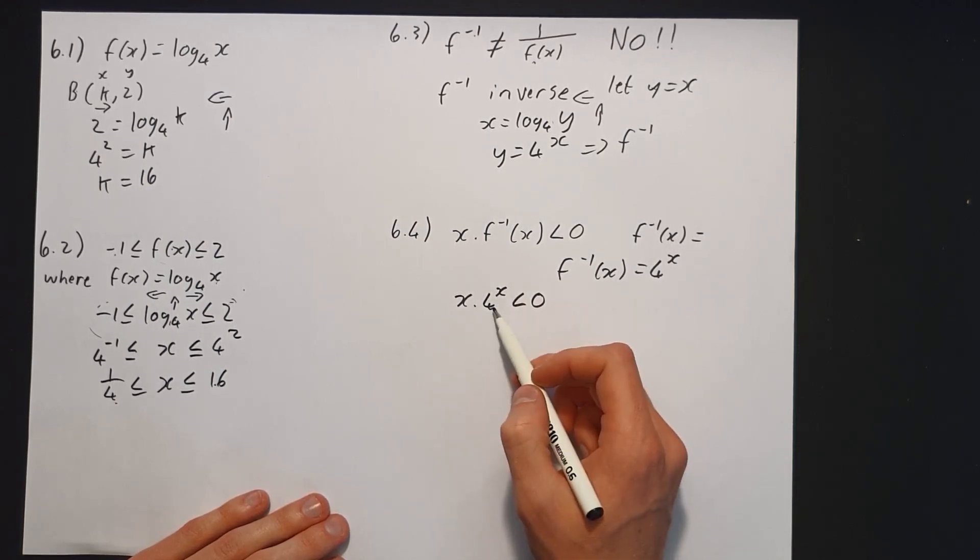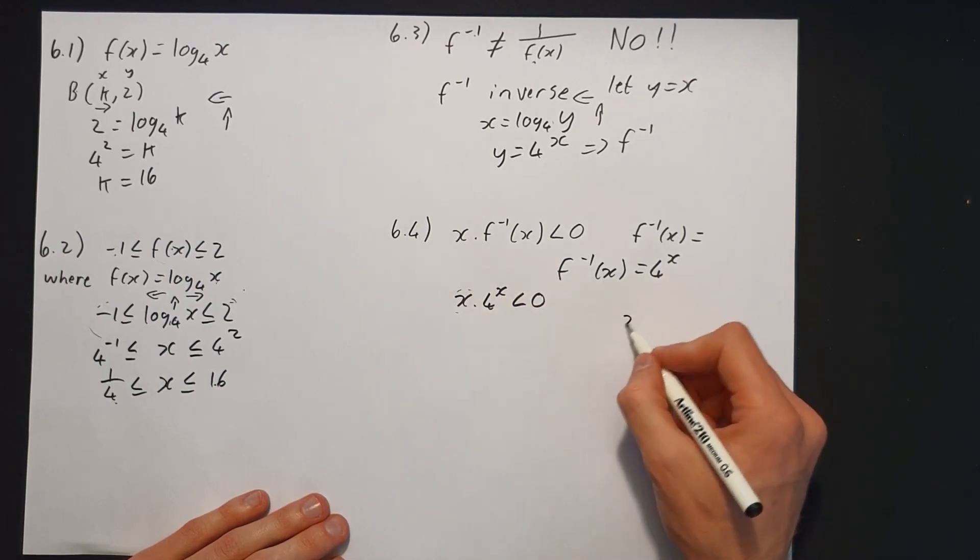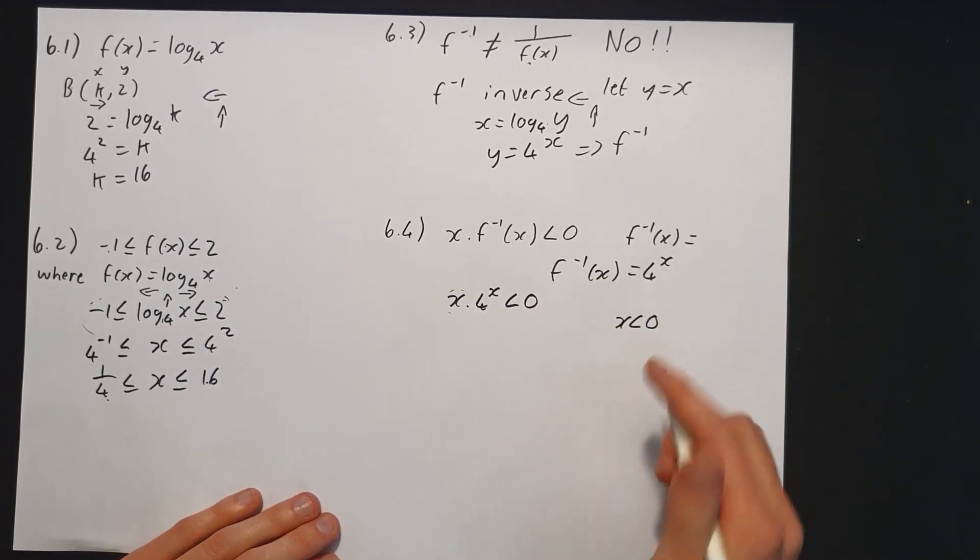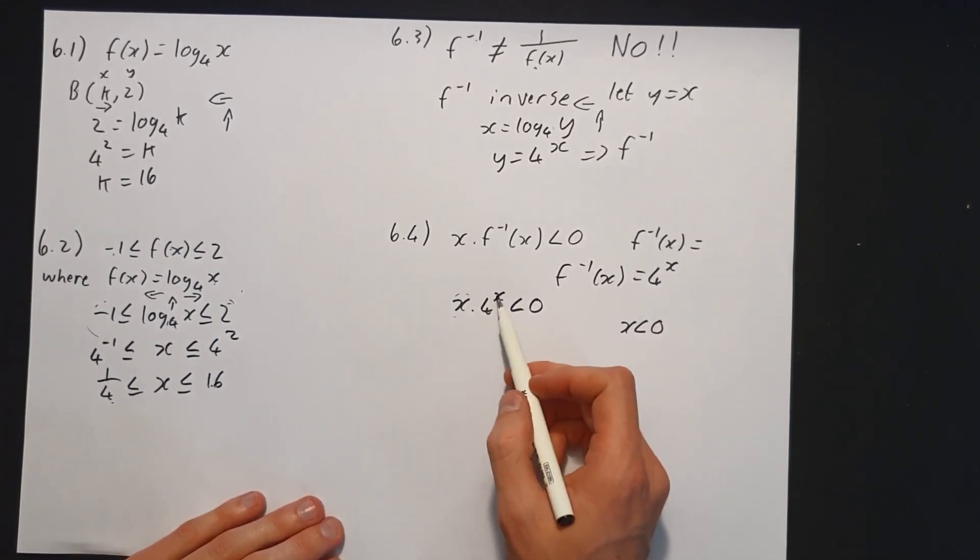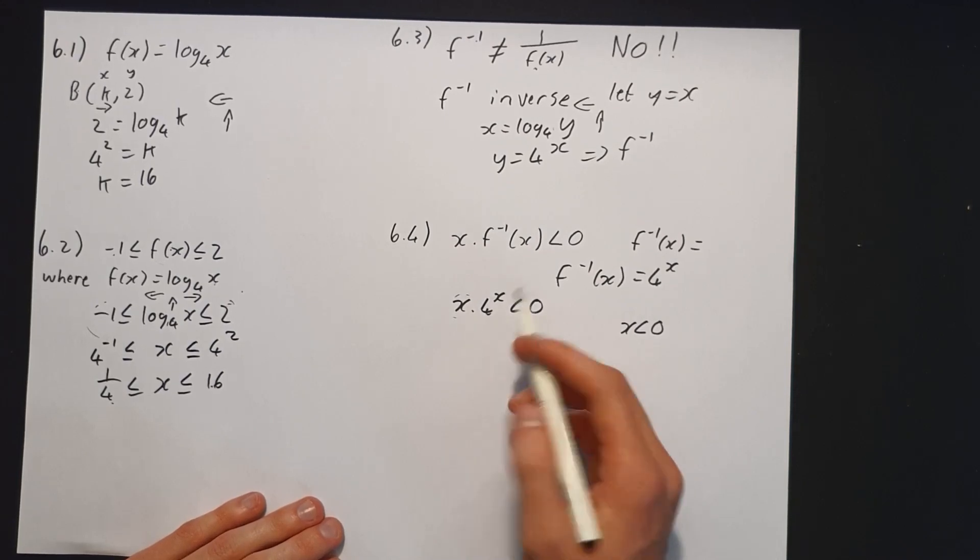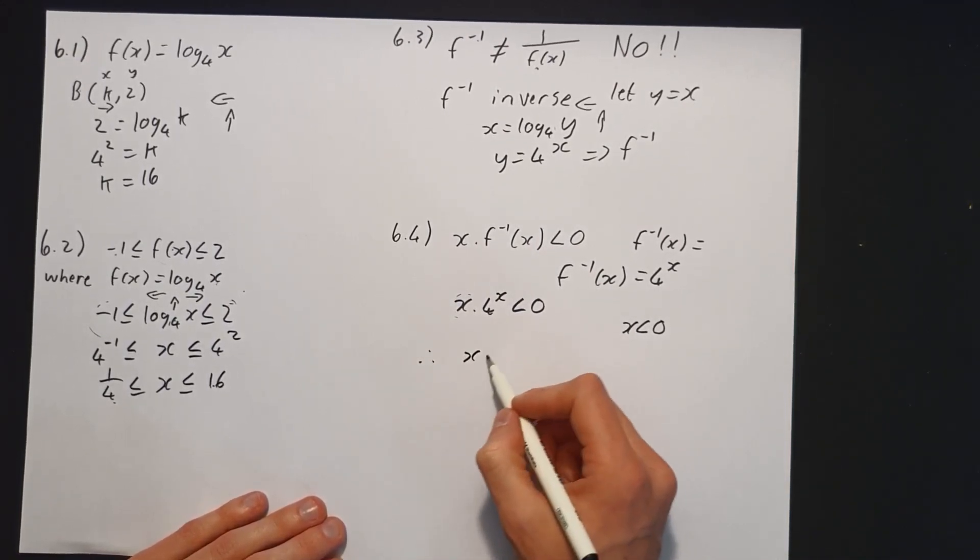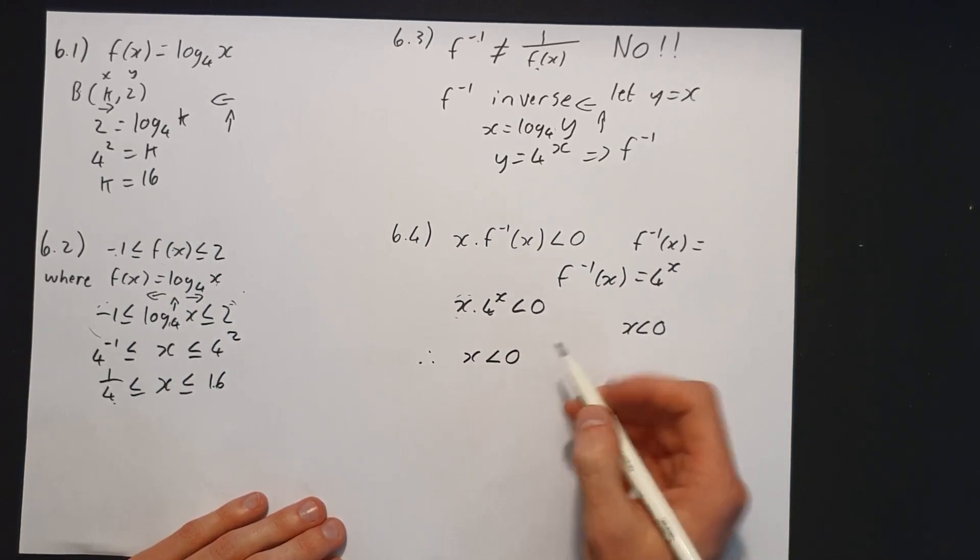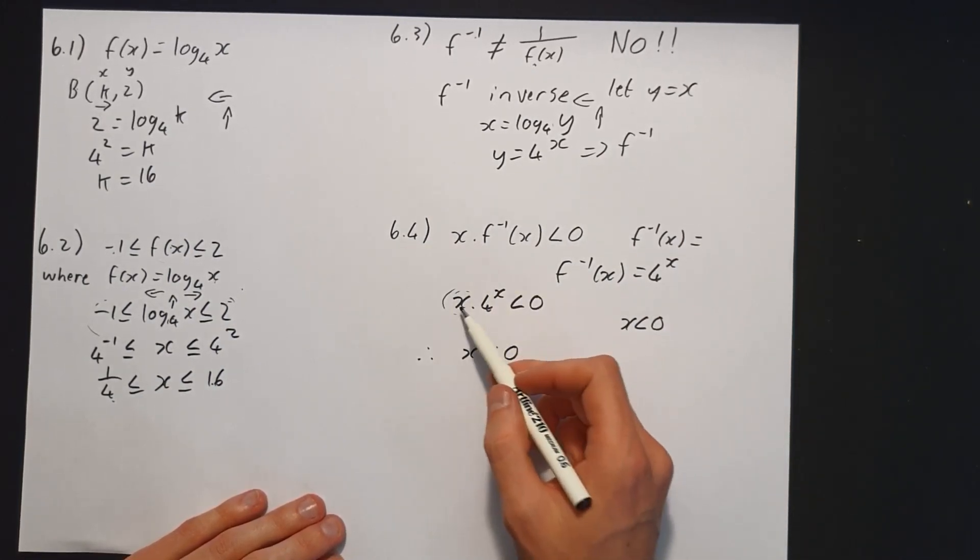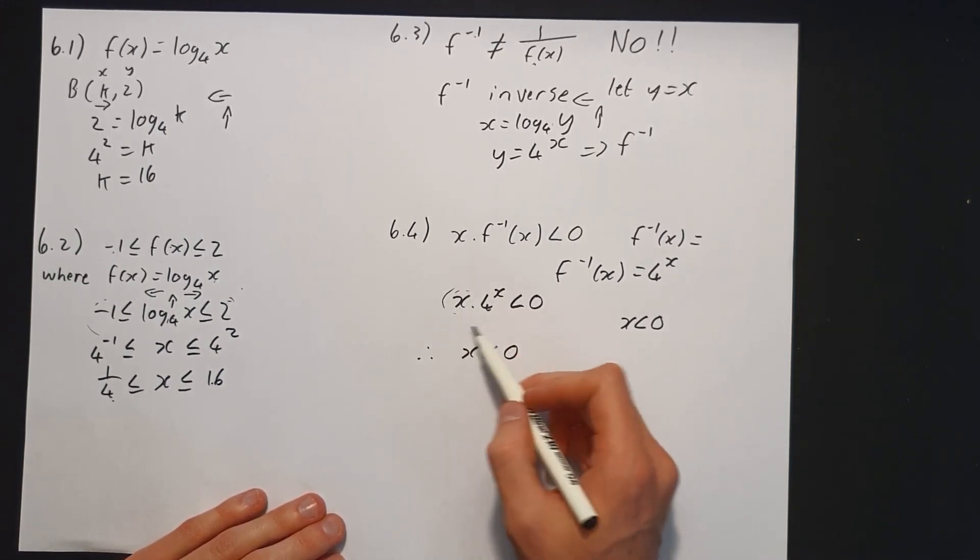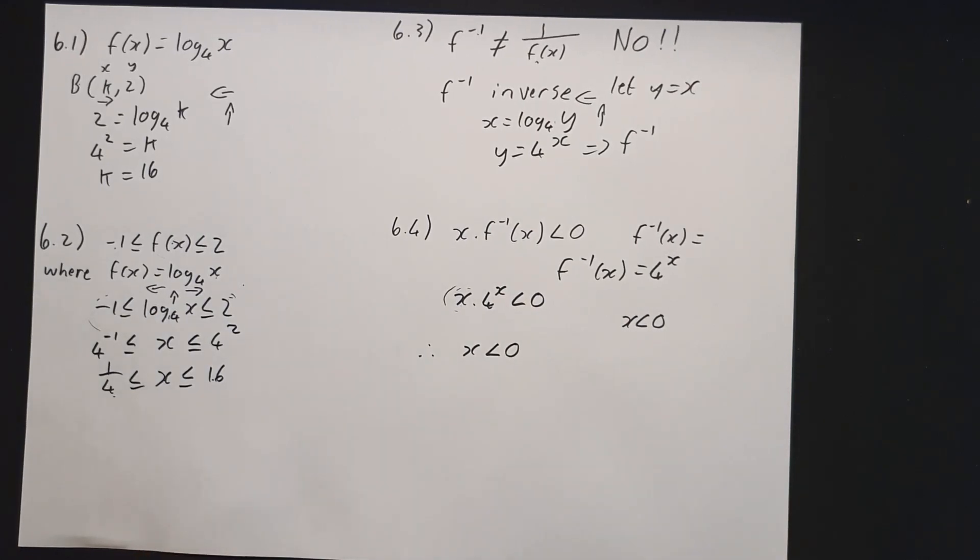then this whole expression becomes 0. If x is less than 0, meaning x is negative, then negative times a positive number will always give a negative number. So therefore we can conclude that x itself needs to be less than 0. Then x times the inverse function will always become negative. That's how we go about doing this question.